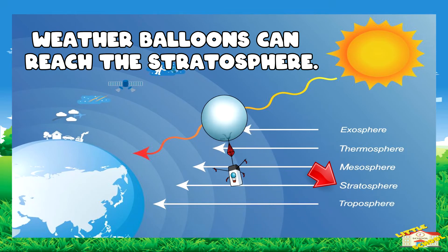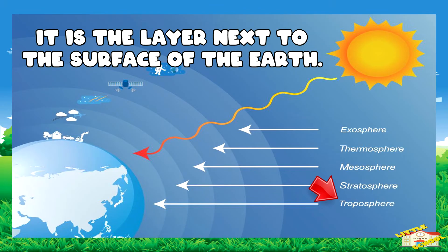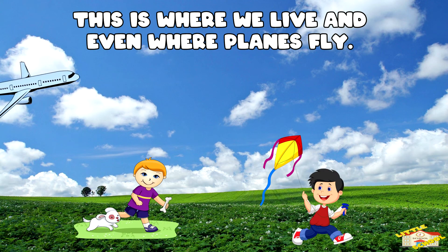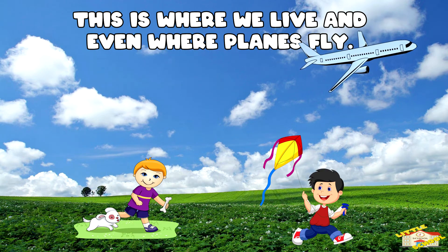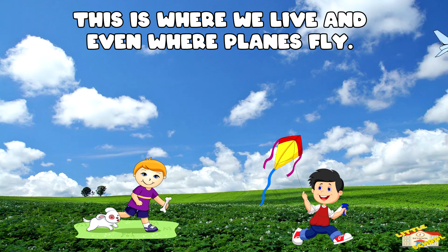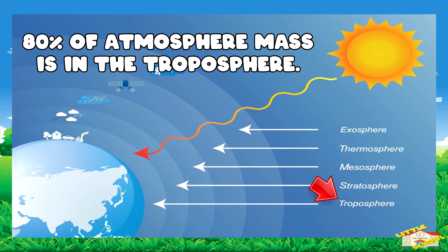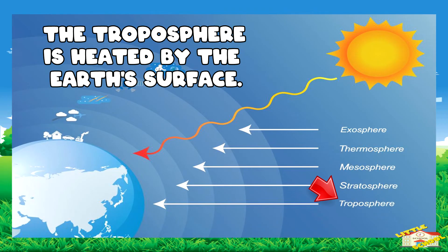Weather balloons go as high as the stratosphere. The troposphere is the layer next to the ground or surface of the Earth. It covers around 30,000 to 50,000 feet high — this is where we live and even where planes fly. Around 80 percent of the mass of the atmosphere is in the troposphere, which is heated by the surface of the Earth.